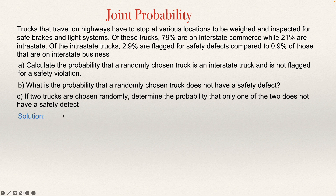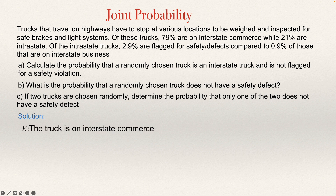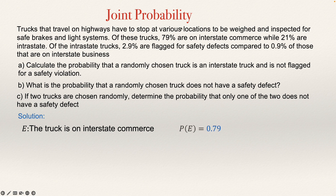First, let's get the information. They give me some events. For example, they tell me that 79% are on interstate commerce. So I'm going to call E this event — the truck that you select is on interstate commerce. They are telling me the probability that that happens: 79% of the trucks are on interstate commerce, so the probability of E is 0.79. There is another piece of information: 21% are intrastate. So if I choose a truck randomly, the probability that it is intrastate will be 0.21.